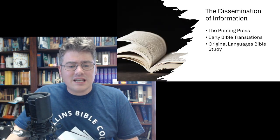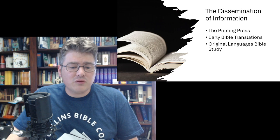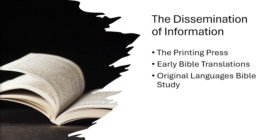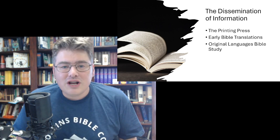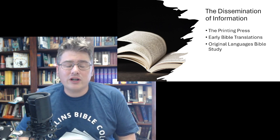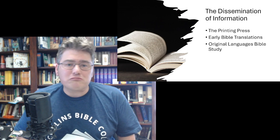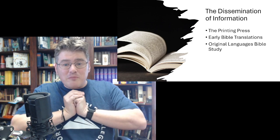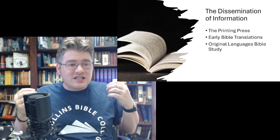We're going to begin with the dissemination of information — this covers a handful of topics and things that really changed in the world that you can't miss. First of all is the Gutenberg printing press, early Bible translations, and original languages study. All of these things really precipitated what we call the Reformation. I'll put forth the idea that the Reformation was at its core a Bible revolution — that with the introduction of the Bible's message going out to the body of Christ, that is what caused this flashpoint.